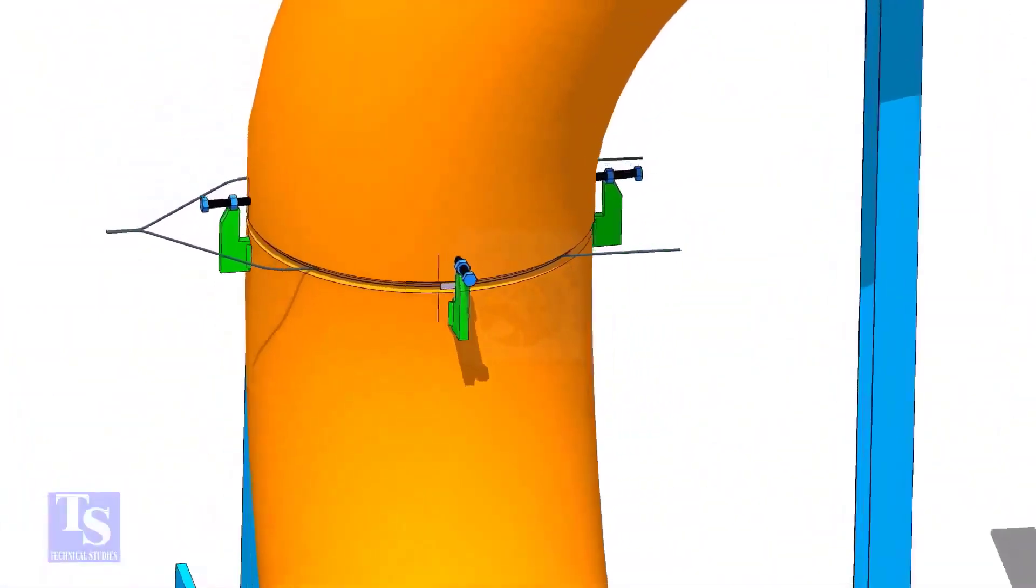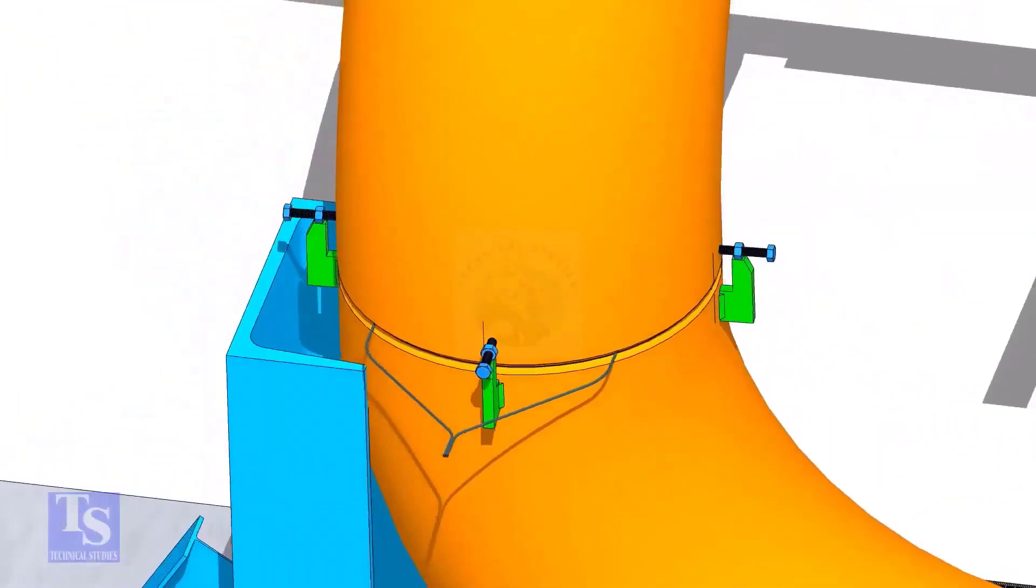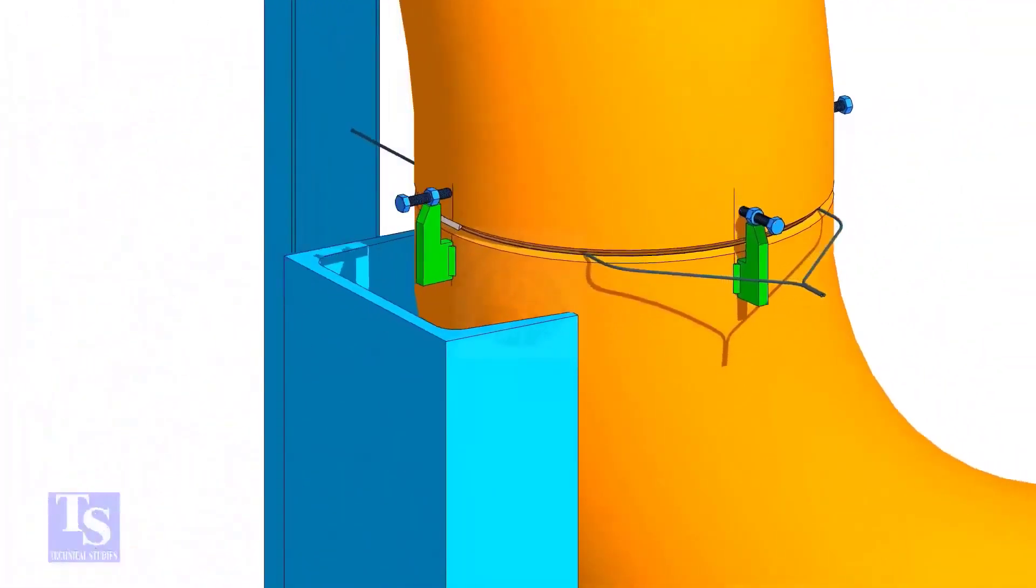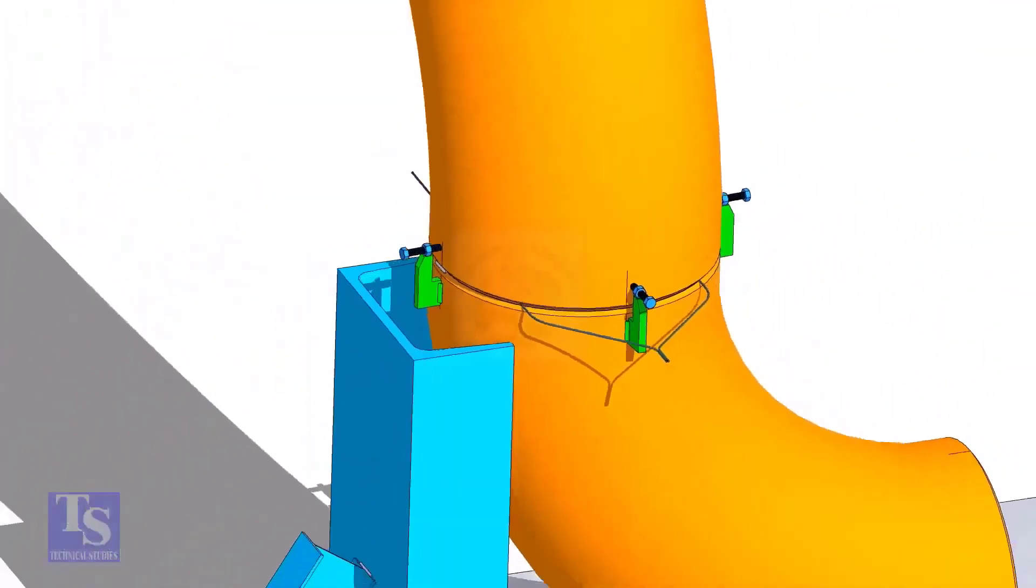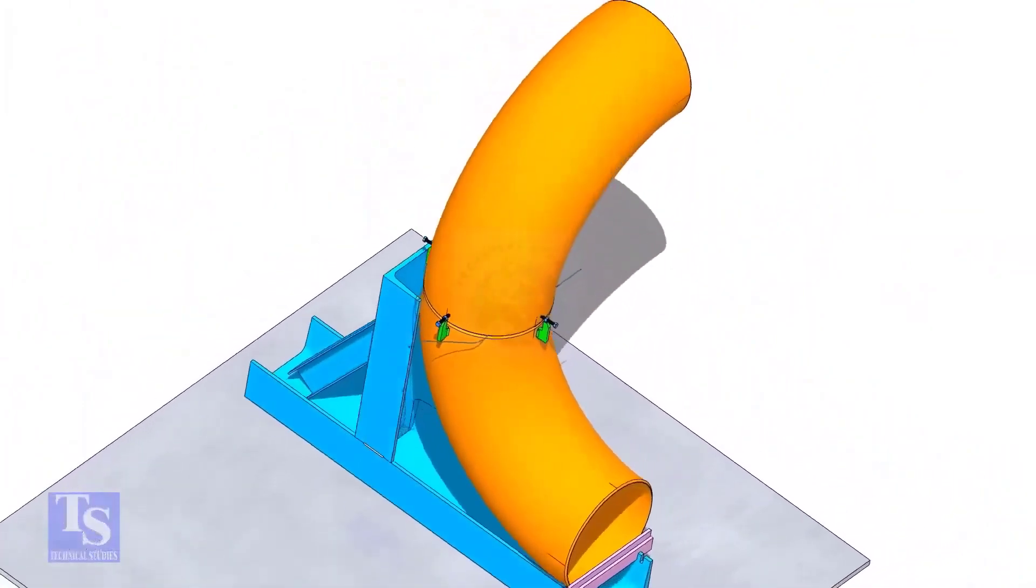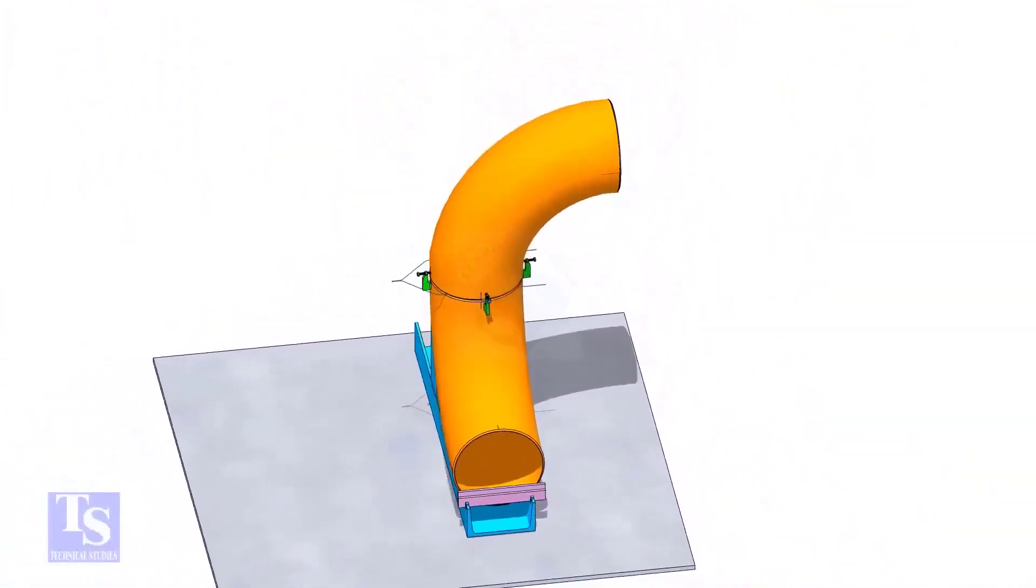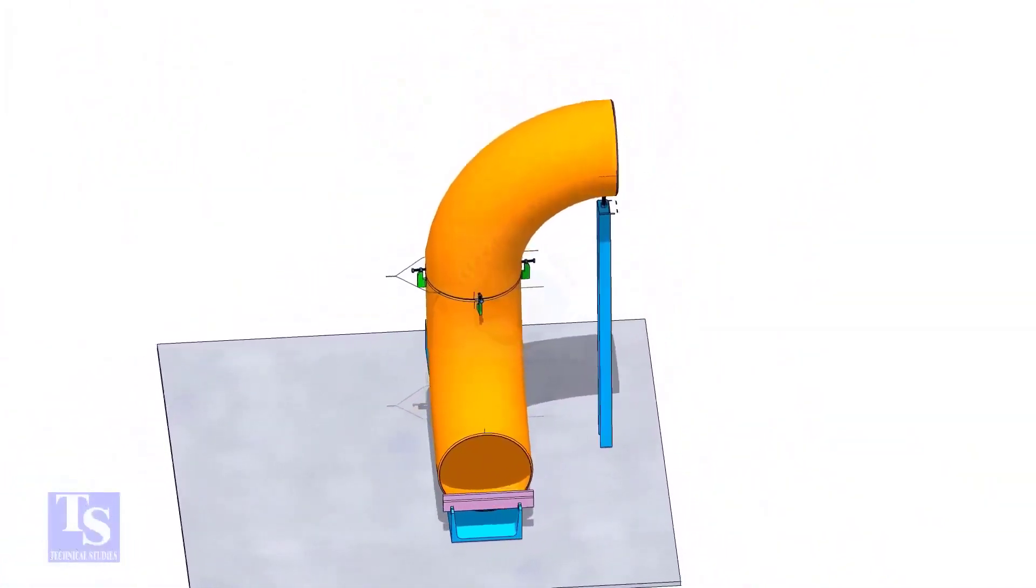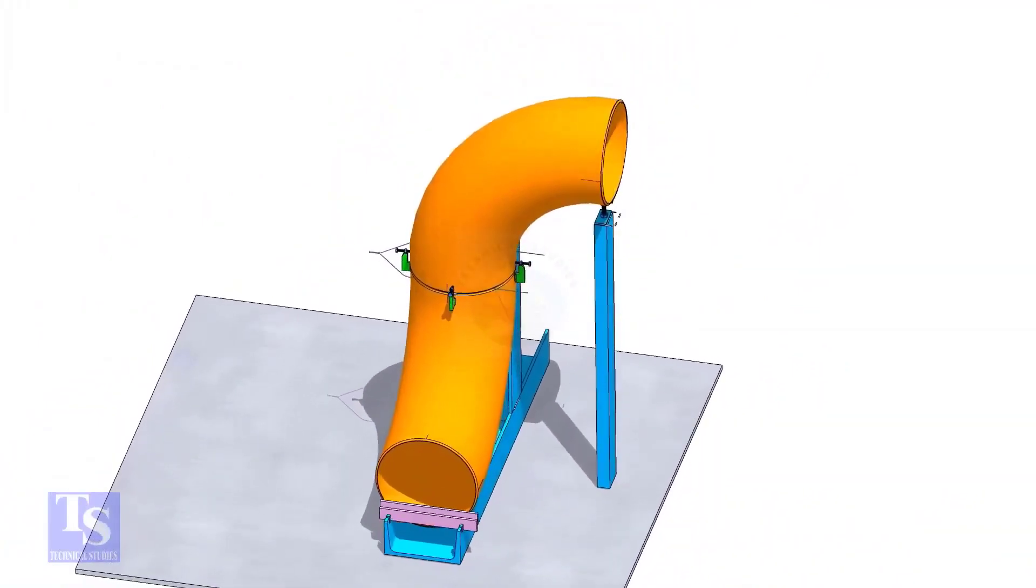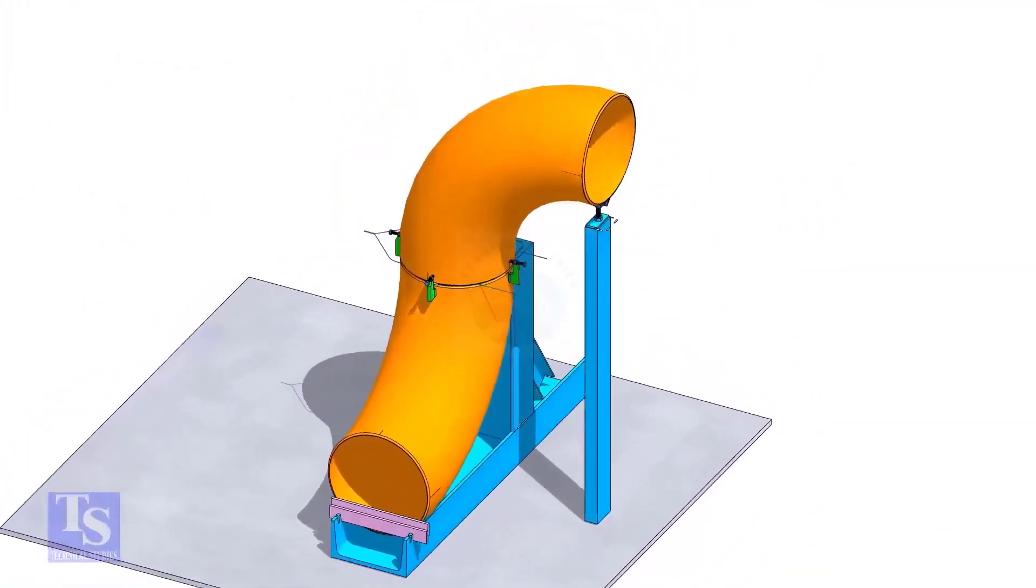Tack weld on the near and far sides of the joint as shown. Check the verticality of the elbow face.